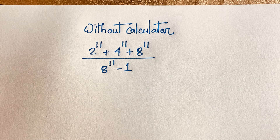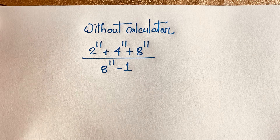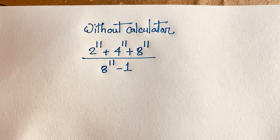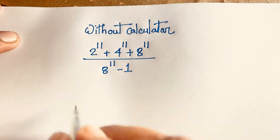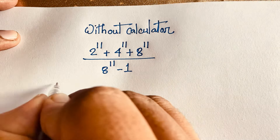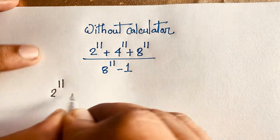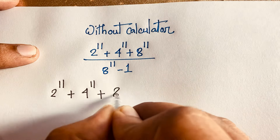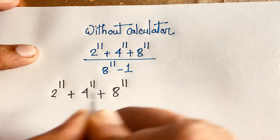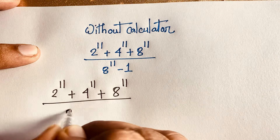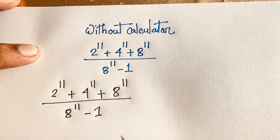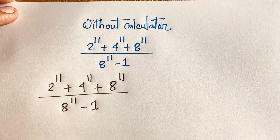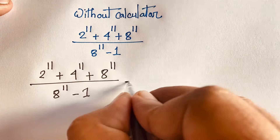Hello everyone. In this video we have solved this interesting maths olympiad question — solved without a calculator. Our question is: 2 to the power 11 plus 4 to the power 11 plus 8 to the power 11, over 8 to the power 11 minus 1.